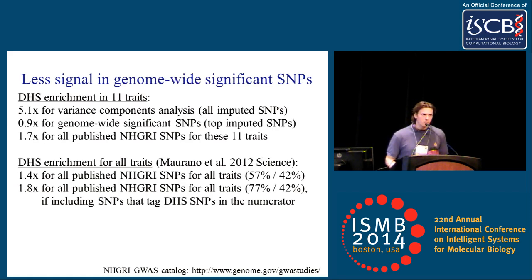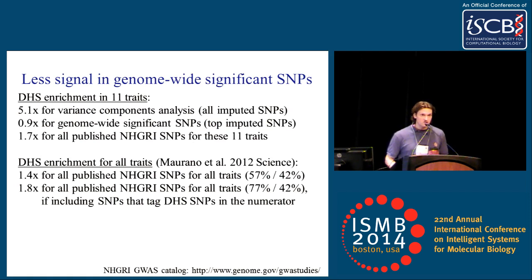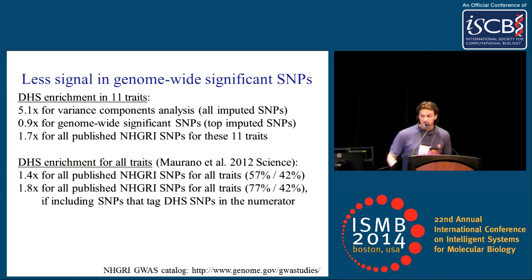You might wonder what you'd find if you looked only at genome-wide significant SNPs. Looking at SNPs genome-wide significant in just the data we analyzed, it's totally flat — 0.9x, no enrichment whatsoever. Ramping up to SNPs genome-wide significant for these traits in the whole NHGRI catalog gives a bit more enrichment at 1.7x, but that's still much lower than 5.1x. The 1.7x is pretty similar to what was previously reported in the Maurano et al. paper, albeit with a different set of DHS annotations.